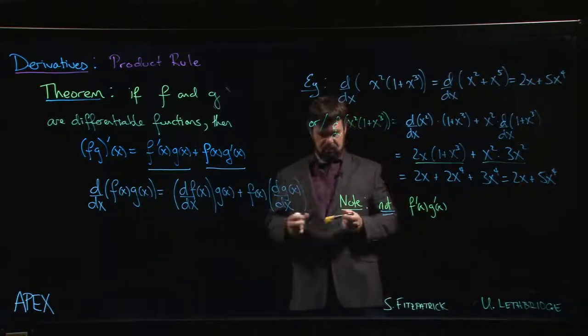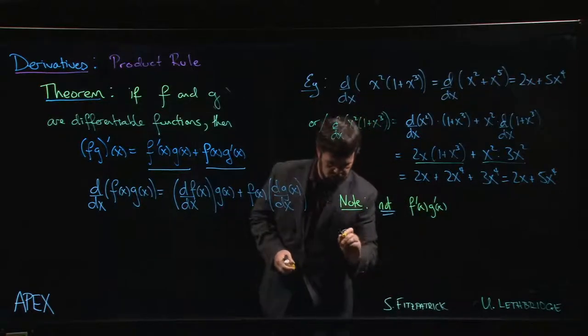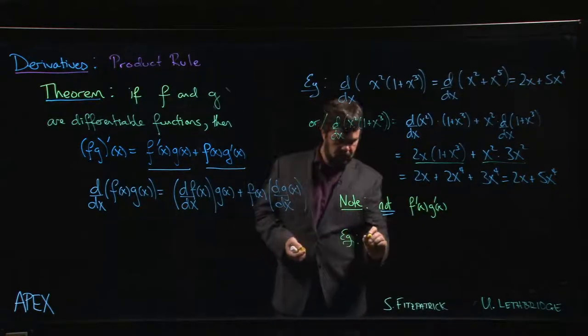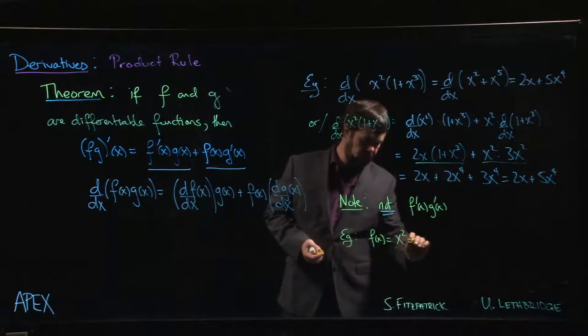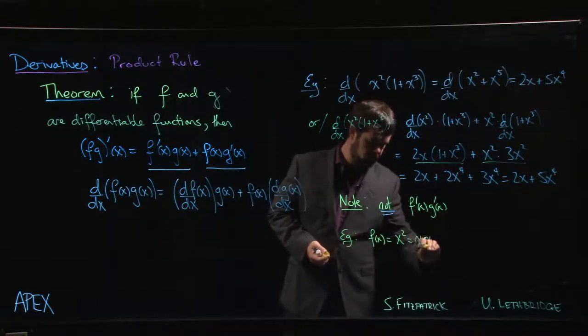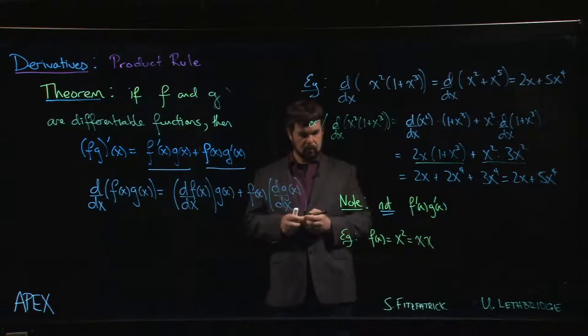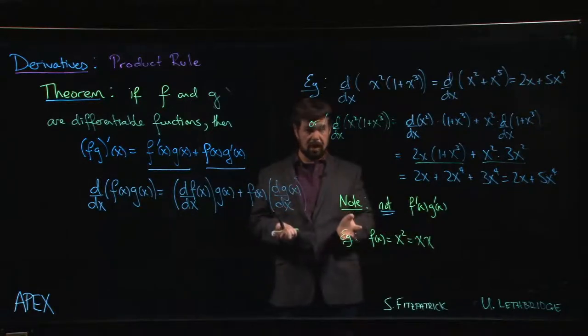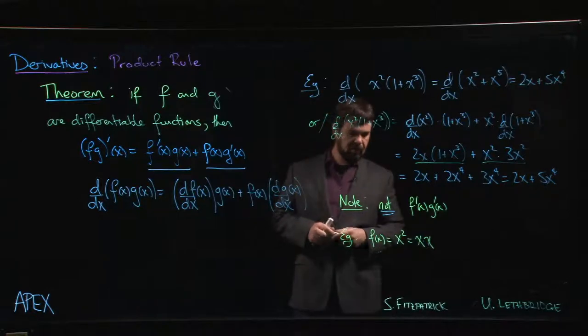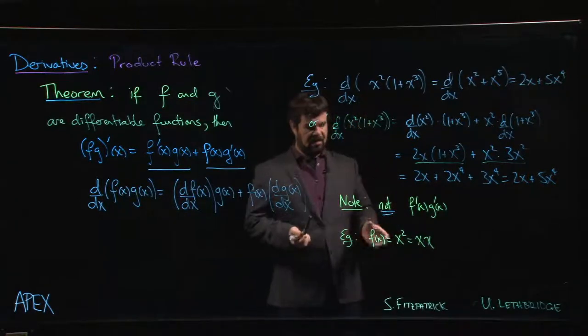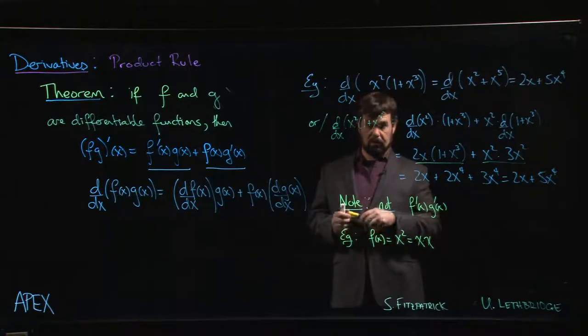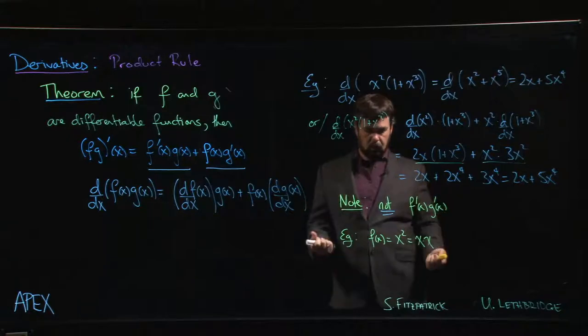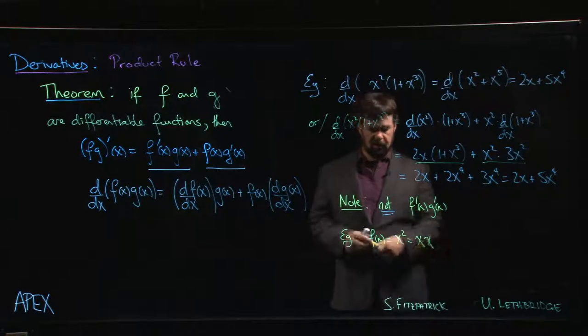Indeed, if that were the case—if we looked at f(x) equals x squared, which of course you can write as x times x. We know that derivative is supposed to be 2x; power rule says that derivative is 2x. If this were the rule, what would we get? We would get simply the derivative of x times the derivative of x, which is 1 times 1. We would say that f prime is just 1. We know that's not right; the derivative is supposed to be 2x.